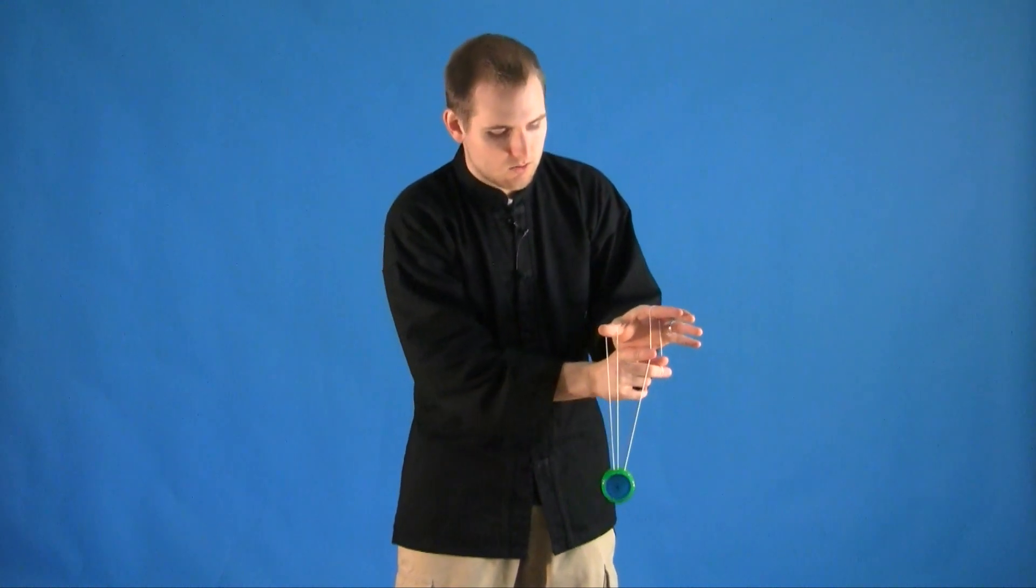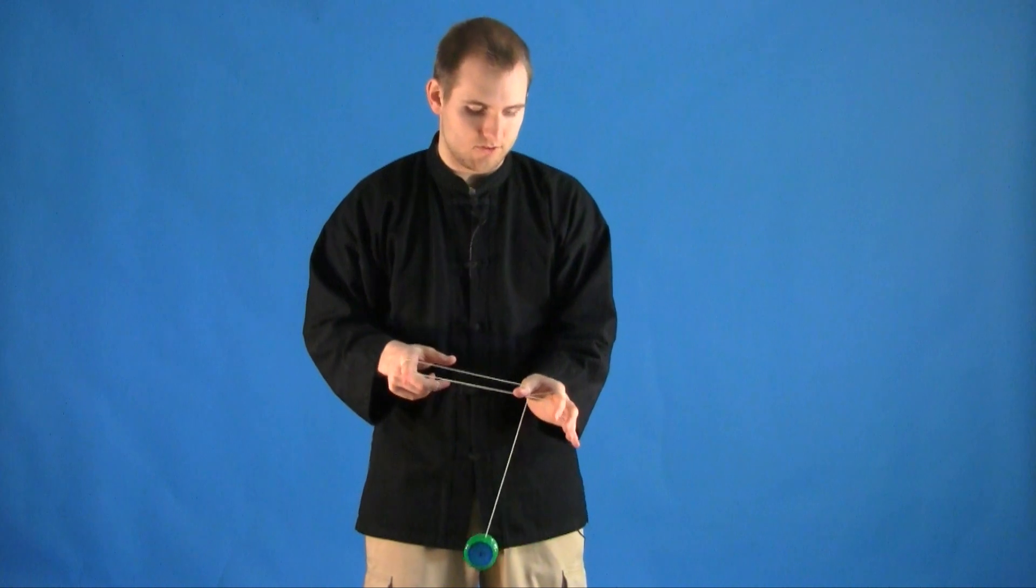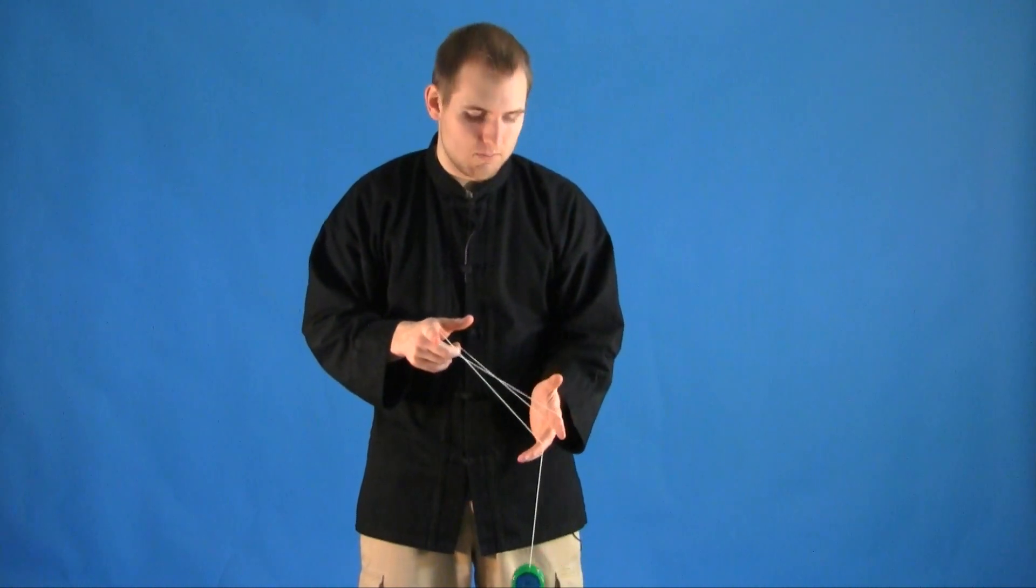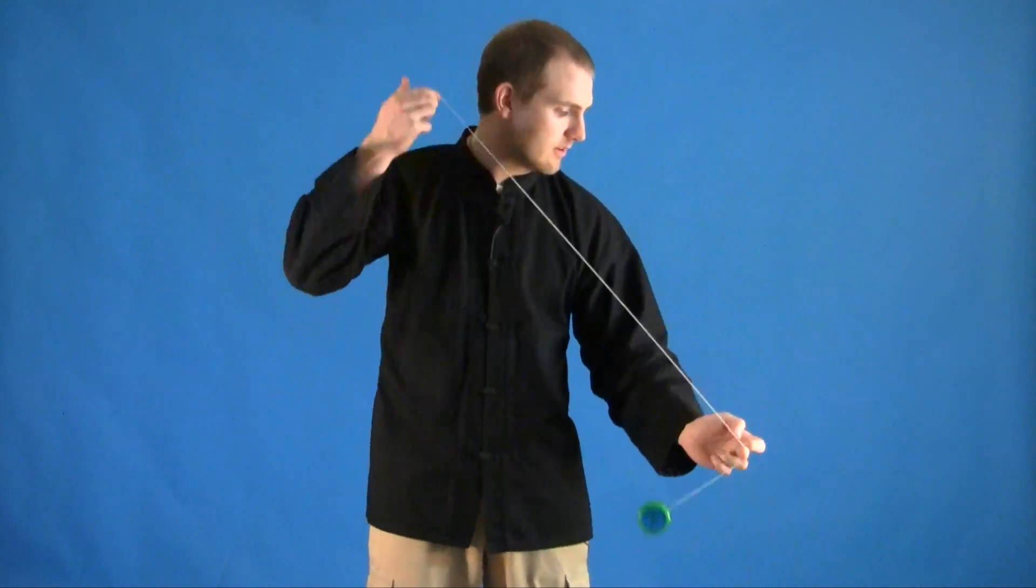We're going to push on this string here, rock the yoyo towards our yoyo hand and drop it right off the string. From here we can continue the momentum right over our opposite index finger into a Double or Nothing and finally you can dismount.